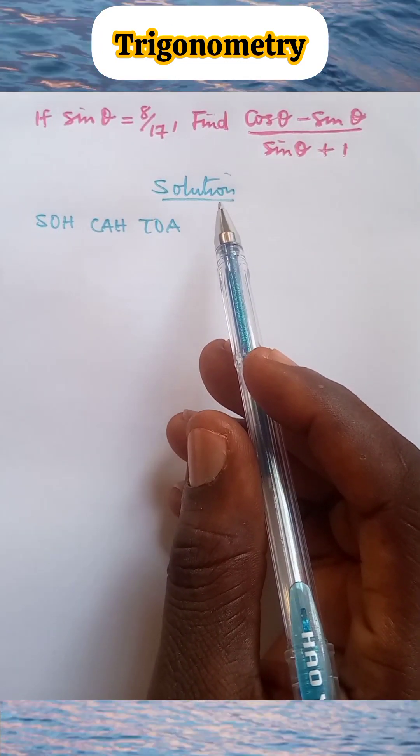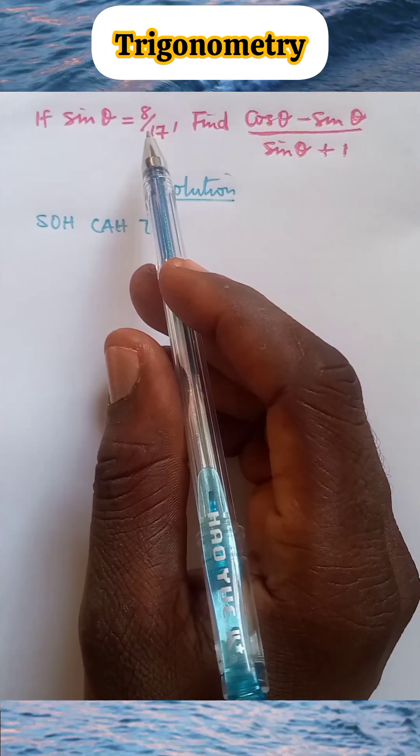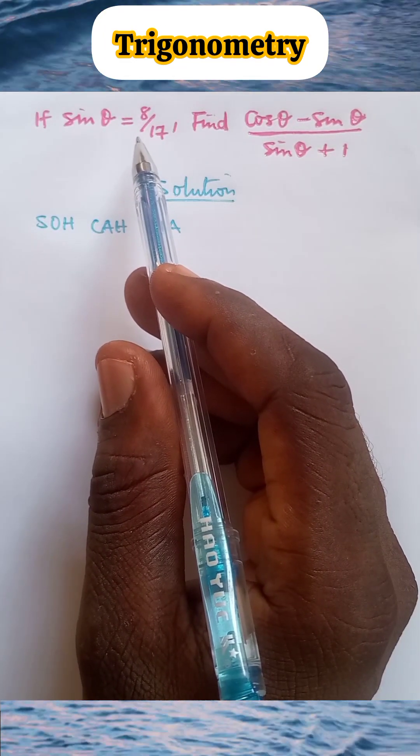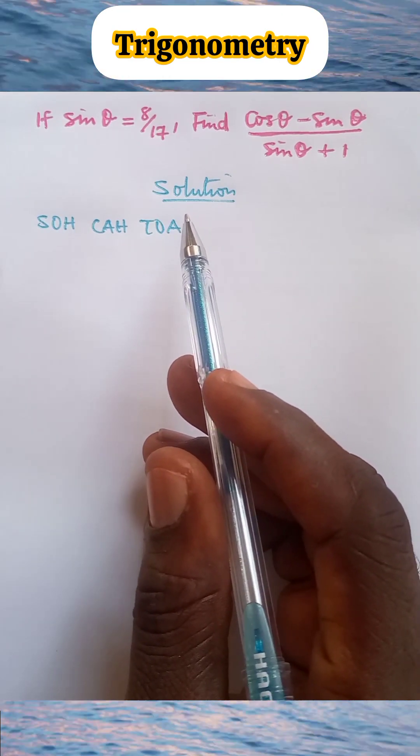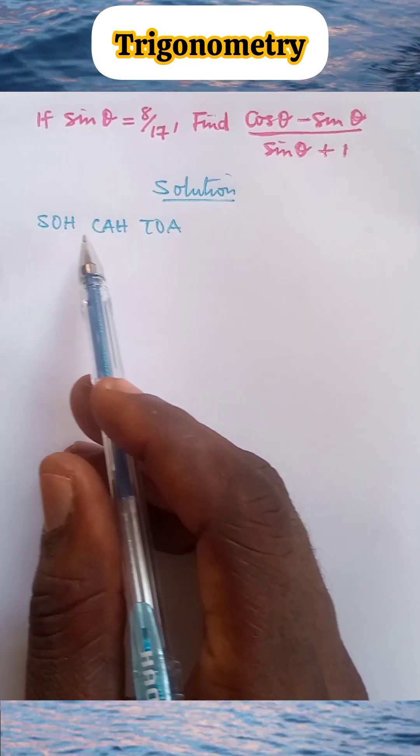And here is the solution. Now we are going to represent this information in a right angle triangle. In trigonometry, in particular theorem, we have an acronym called SOHCAHTOA.